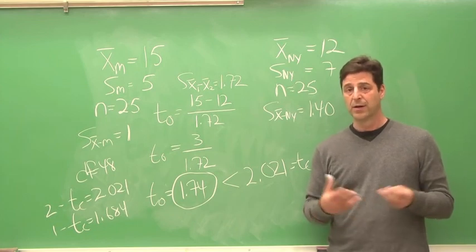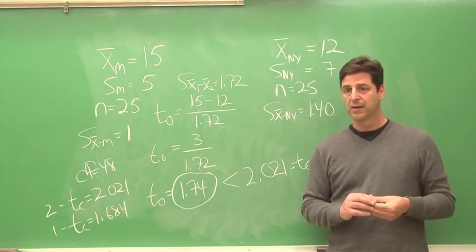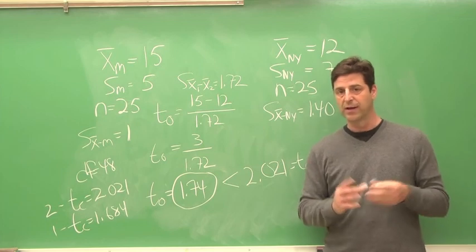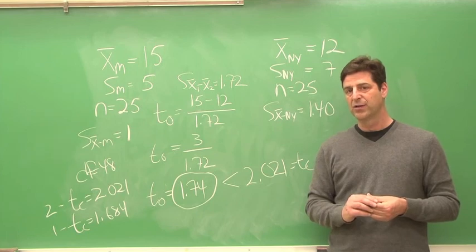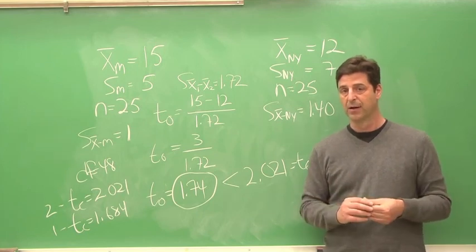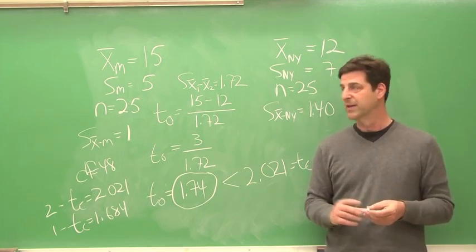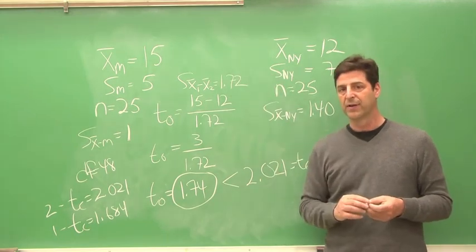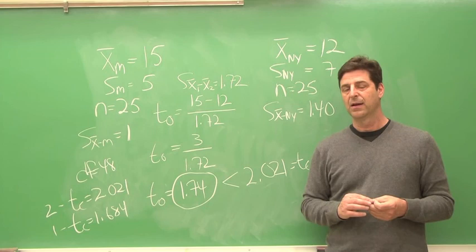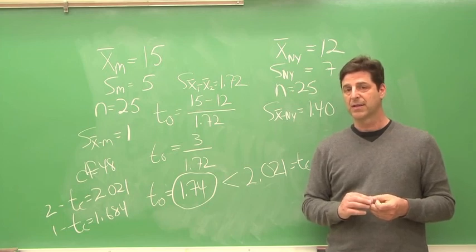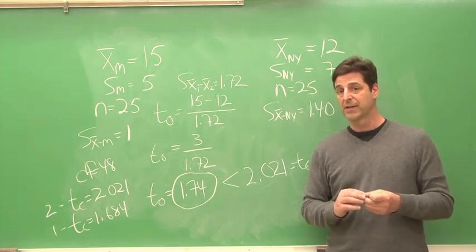Therefore, we're going to conclude there is no difference in the average water quality of New York lakes and Michigan lakes. Our results were too likely due to chance or random sampling error for us to rule out chance as the reason why we got this difference in our sample means. And that is how you calculate an independent samples t-test and how you interpret the results. Hope that's helpful.